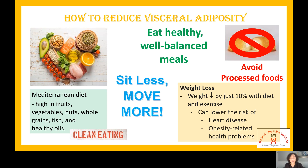How can you reduce your visceral adiposity? Eat healthy, well-balanced meals, focusing on fiber and lean protein. The Mediterranean diet is really good for this — it's high in fruits, vegetables, nuts, whole grains, fish, and healthy oils. Reduce plain white bread and plain pasta, switch to grainy foods, and definitely avoid processed foods. Movement is also very important: sit less, move more. Decreasing your weight by just 10% with diet and exercise can lower your risk of heart disease and all other obesity-related health problems, such as sleep apnea.